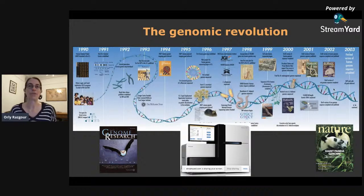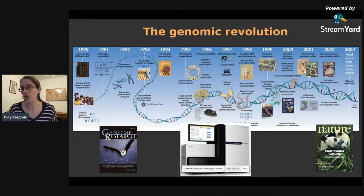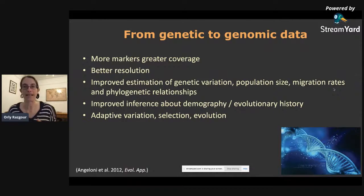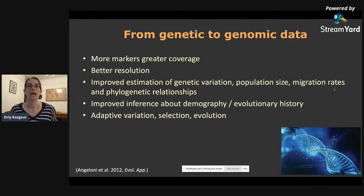What really enabled this difference is technological development in sequencing and the development of high-throughput sequencing, also known as next-generation sequencing. This means that genomic research is now open to non-model organisms, including species of conservation concern, as well as to studying adaptations in wild populations. This has really shifted the field from using genetic data to using genomic data, providing much more markers with greater genome coverage, better resolution for analyses, and improved estimations of genetic variation, population size, migration rates, gene flow, and phylogenetic relationships.